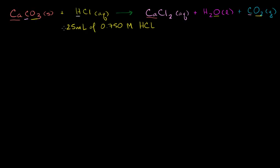On the left-hand side we have one hydrogen, but on the right-hand side we have two hydrogens. So let's balance it — put a 2 in front of the hydrochloric acid. Now the hydrogens balance out. We haven't done the chlorines yet: we now have two chlorines on the left-hand side and two on the right-hand side. So this equation is now balanced after adding that coefficient of 2.